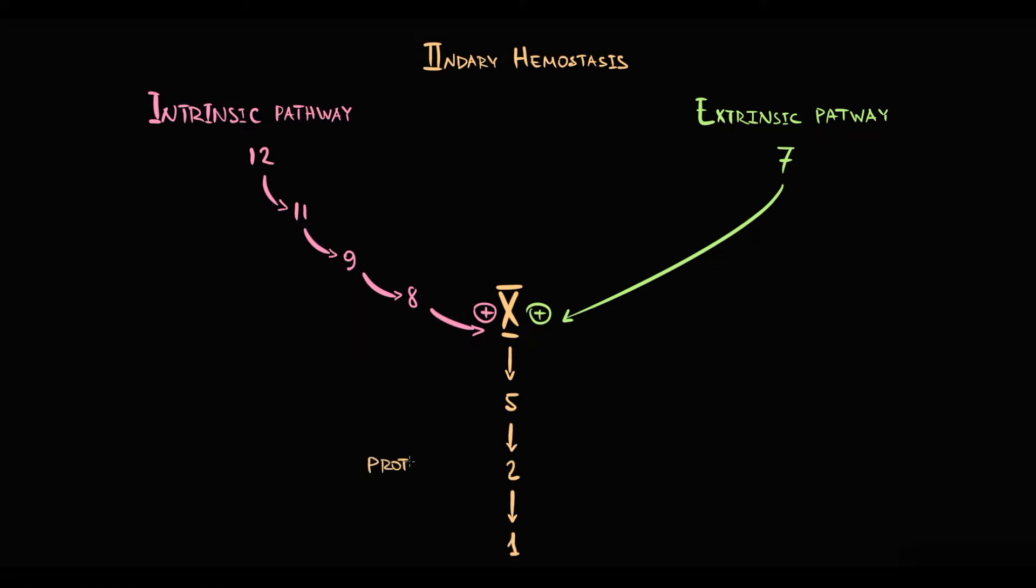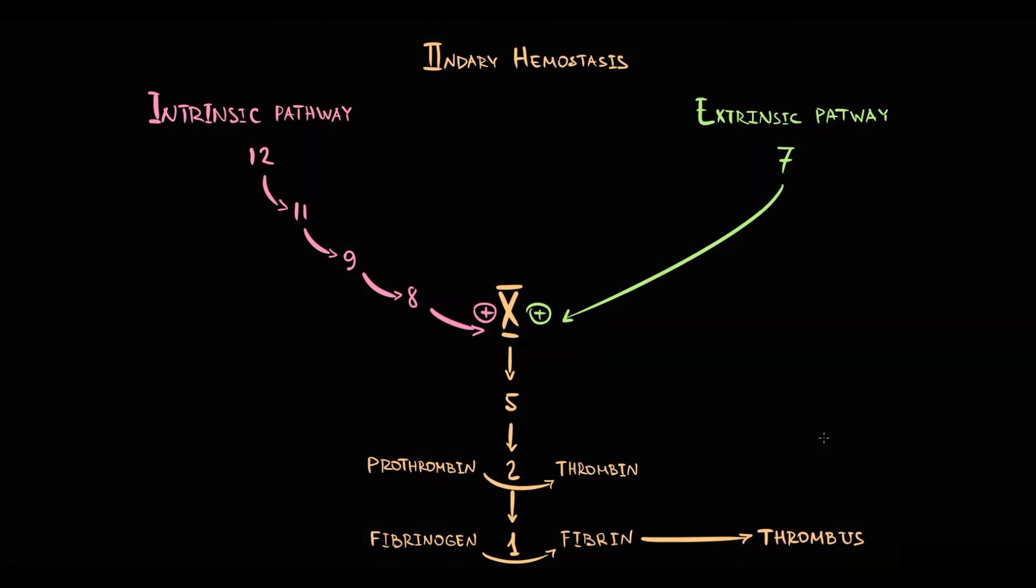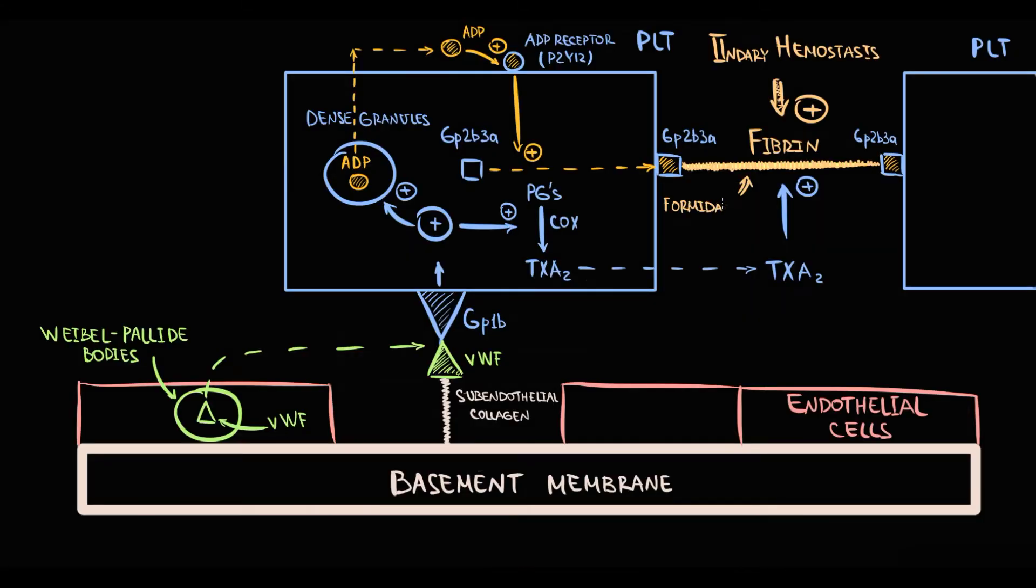Factor 2 is called prothrombin that with activation becomes thrombin. Factor 1 is called fibrinogen that with activation becomes fibrin. Exactly fibrin makes from the platelet plug a formidable thrombus. So secondary hemostasis converts the platelet plug into a thrombus.